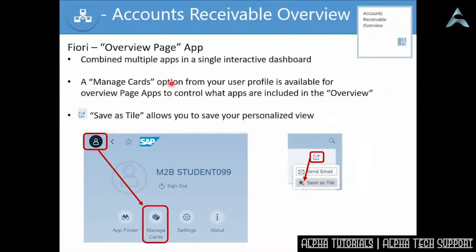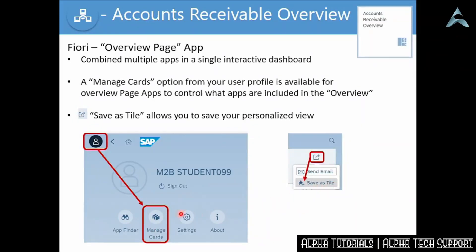One word about overview page apps: an overview page app allows you to combine multiple apps in one single interactive dashboard. The unique thing about it is the Manage Cards option. To access Manage Cards, use your profile in the top left-hand corner, and you'll see the Manage Cards tile option — this controls what tiles or apps are available in the overview. Once you've personalized your screen, look for the Save as Tile option, which allows you to save your personalized tile. The Manage Cards option is specific to overview page apps only. Let's have a look at it in action in a live demo.